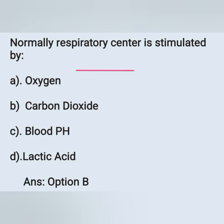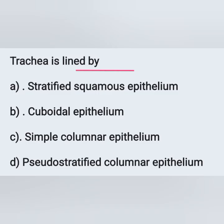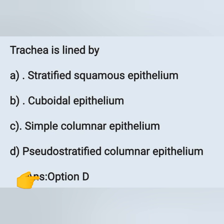Next question: the trachea is lined by? Options: A) stratified squamous epithelium, B) cuboidal epithelium, C) simple columnar epithelium, D) pseudostratified columnar epithelium. The trachea is lined by pseudostratified columnar epithelium. Option D is the correct answer.